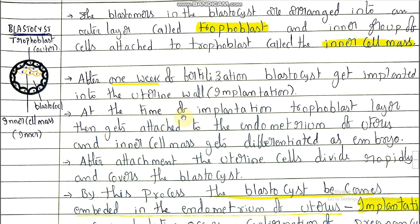How much time does it take for the formation of blastocyst from the zygote? After fertilization, the zygote undergoes different types of cleavage, blastomere formation takes place, the morula is formed, and from the morula the blastocyst is formed. It takes one week — after one week of fertilization, the blastocyst gets implanted into the uterine wall. That is implantation.